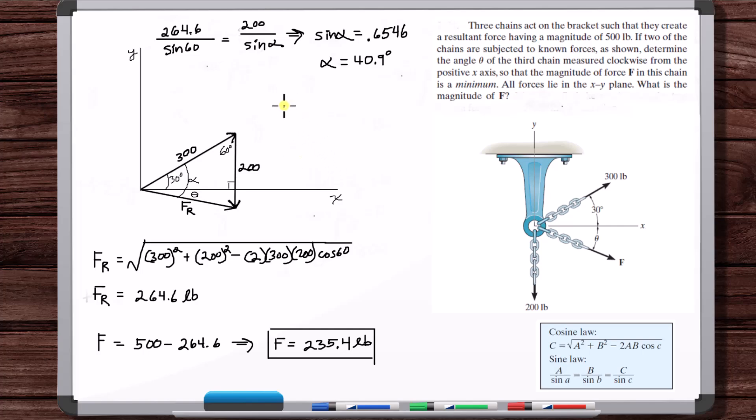Now theta is alpha minus 30. Theta is equal to 10.9 degrees. And that's your answer. 10.9 degrees.